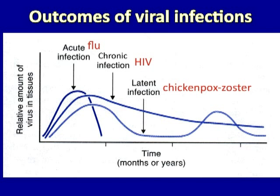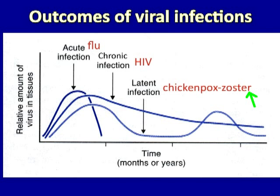Here are some examples of viral infections in these three categories. Influenza is an example of an acute infection — it causes mild to severe symptoms during the acute phase, but is cleared from the body and the virus is eliminated. In contrast, HIV, the hepatitis viruses, and many others may cause chronic infections where the virus persists in a subset of cells over a very long period of time, continually producing damage to the host. As an example of latent infection, we have chickenpox with recurrent zoster: chickenpox occurs in childhood, but some virus may remain latent in sensory ganglion cells in the spinal column and emerge years later as an eruption of herpes zoster.